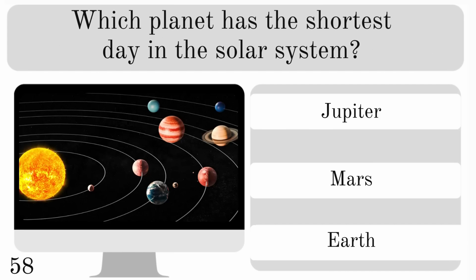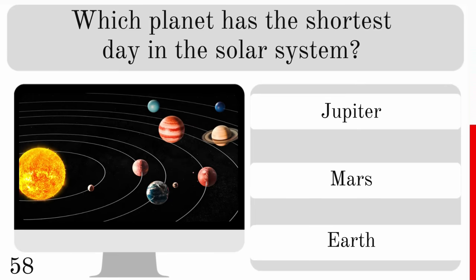Which planet has the shortest day in the solar system? Is it Jupiter, Mars or Earth? The one with the shortest day is Jupiter.